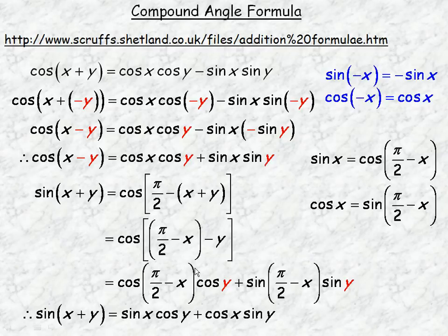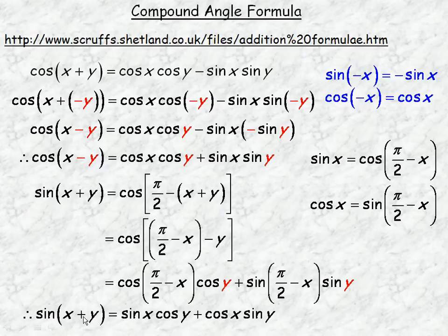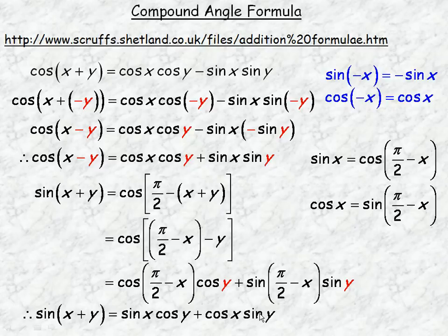The cosine of pi over 2 minus x equals sine x, so we replace that term with sine x. The sine of pi over 2 minus x equals cos x from the co-function identities, so we replace that with cos x. Therefore, sine(x plus y) equals sine x cos y plus cos x sine y. For sine, each term has one sine and one cosine, and when adding two angles the sign between the terms is also a plus.